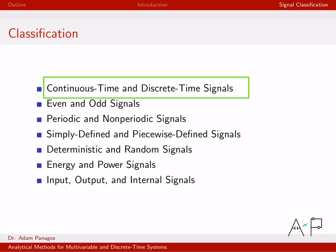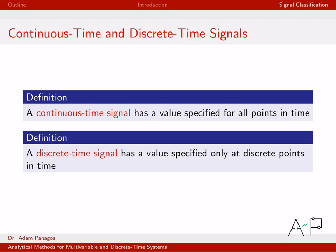A continuous time signal is a signal that is specified for all points in time. Discrete time signals, on the other hand, are only defined at discrete points in time. Whereas for a continuous time signal you can pick any real-valued number — an uncountably infinite number of values — a discrete time signal is only going to exist at either a finite number of points in time or a countably infinite number of points in time.